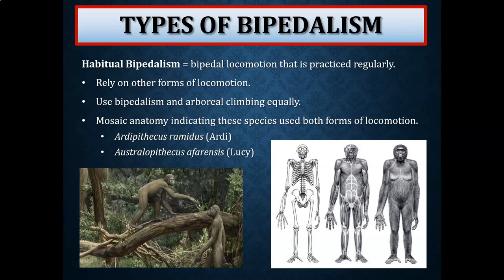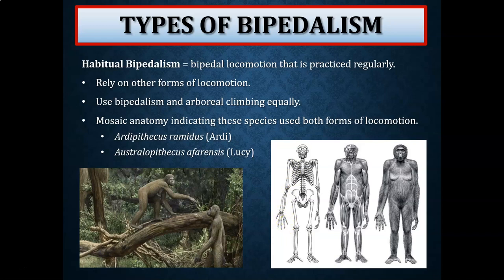Examples we're going to review include Ardipithecus ramidus, nicknamed Ardi, and Australopithecus afarensis, nicknamed Lucy. When you look at the Ardipithecus ramidus fossil, it's extremely mosaic — the arms are much longer than you would expect in a typical biped, and the finger bones, the phalanges, are longer and curved, allowing for retention of arboreal climbing and possibly some degree of brachiation. The pelvis top half is much more like a biped, bottom half more like a quadruped. The femur is longer and angled inward towards the knee — we call that the bicondylar angle.